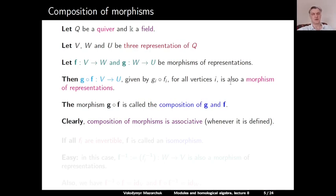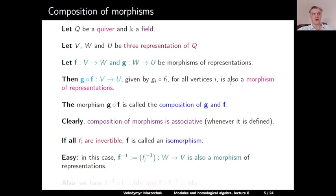Moreover, if all components of a morphism are invertible, then it is called an isomorphism. In this case, inverting each component gives a morphism in the opposite direction, denoted F inverse, and the composition of F and F inverse is the identity morphism — the identity on V in one direction and the identity on W in the other.